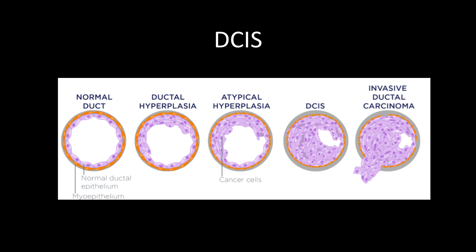On the left you have the normal duct with normal cells forming the ductal epithelium. With time you can develop ductal hyperplasia, or atypical ductal hyperplasia, known as ADH. ADH when found on pathology is often excised through surgical excision, because it is thought to be a precursor for DCIS and subsequently IDC.